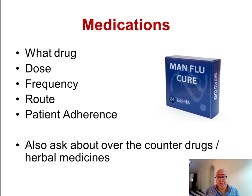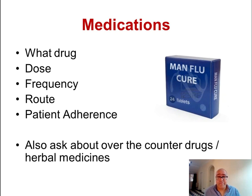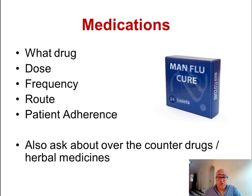With respect to medications, we need to explore what drugs people are taking, their doses, frequency, and route. It's also really worth exploring adherence to medications, particularly in chronic disease. Using asthma as an example: if a patient presents with an acute exacerbation, it may be relevant to explore their adherence to their regular preventative inhaler, as poor adherence may be a factor in their presentation.